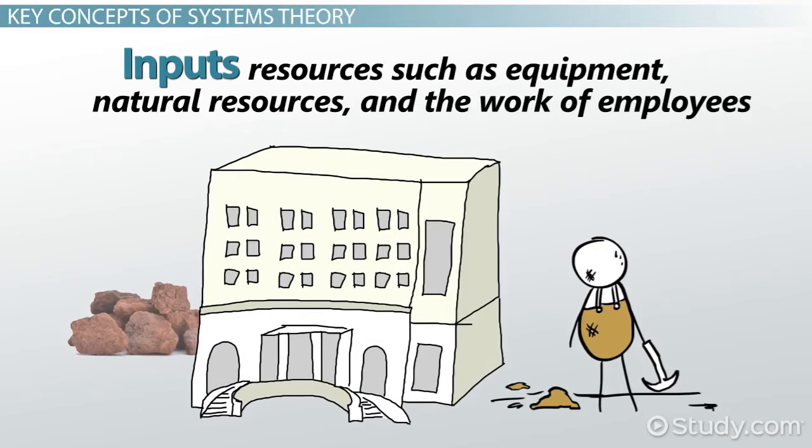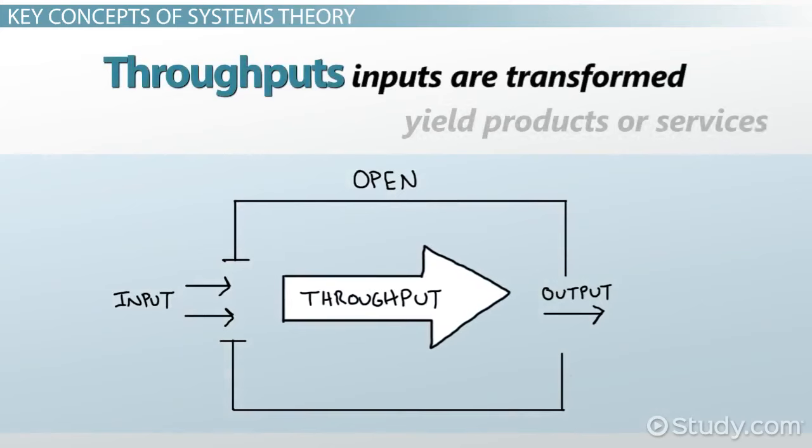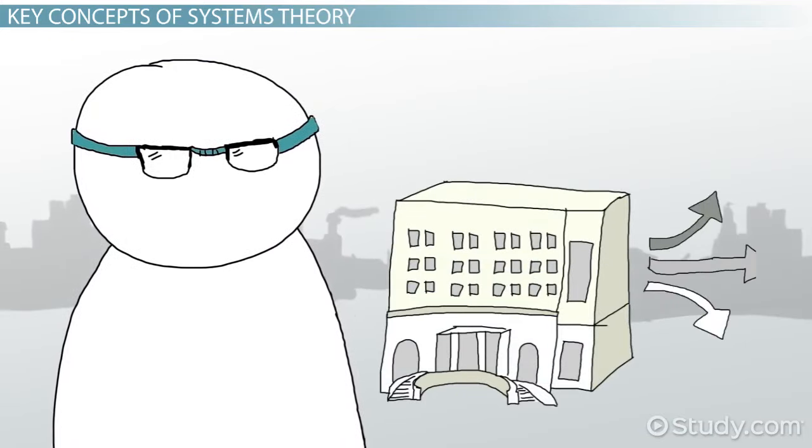The inputs are transformed, called throughputs, and then yield products or services, called outputs. Outputs are released into the environment.